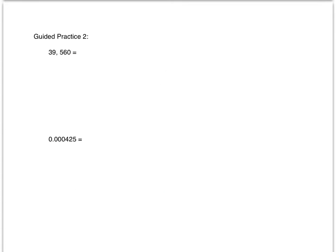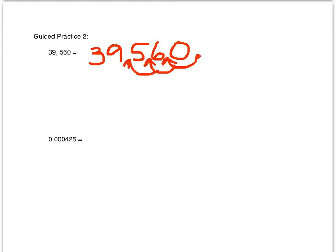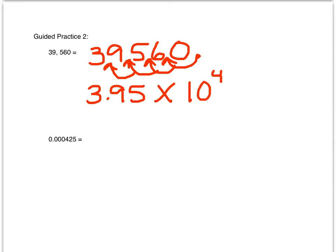Let's do a couple of examples together. 39,560 — in order to change 39,560 to scientific notation, we have an assumed decimal point at the end of the number. We'll move the decimal point four places until we have a number that is greater than or equal to one and less than ten. 3.956 satisfies those requirements, and then we'll multiply it times 10 to the fourth power. The exponent is positive because 39,560 is greater than one.